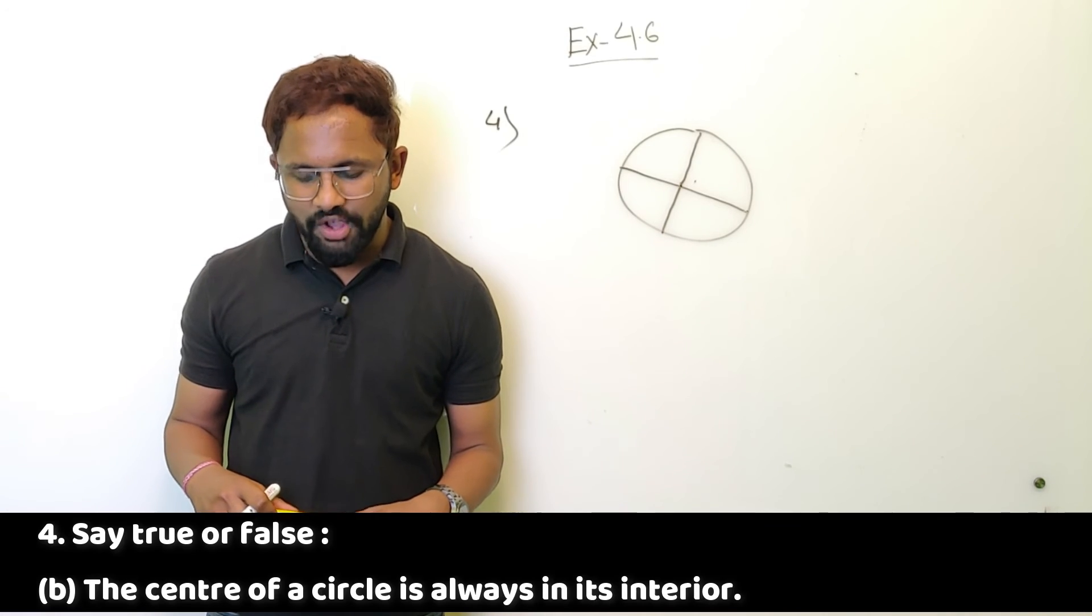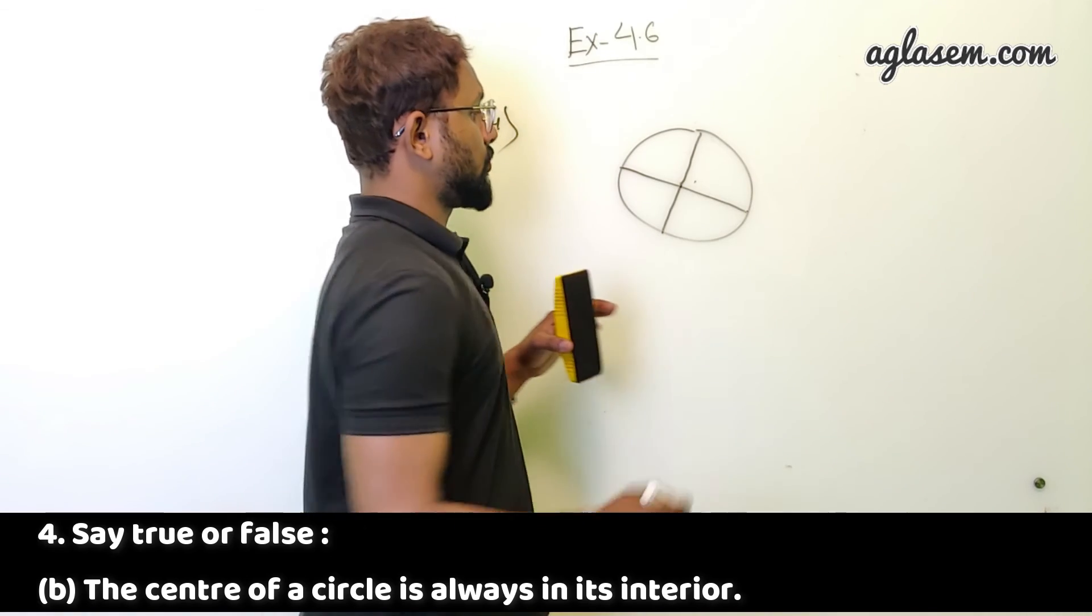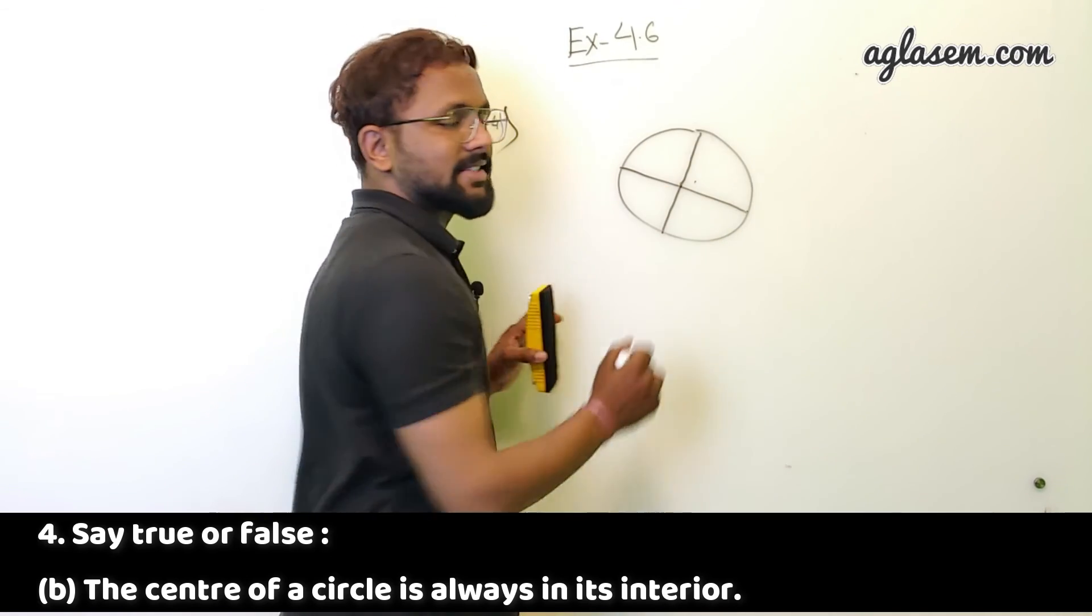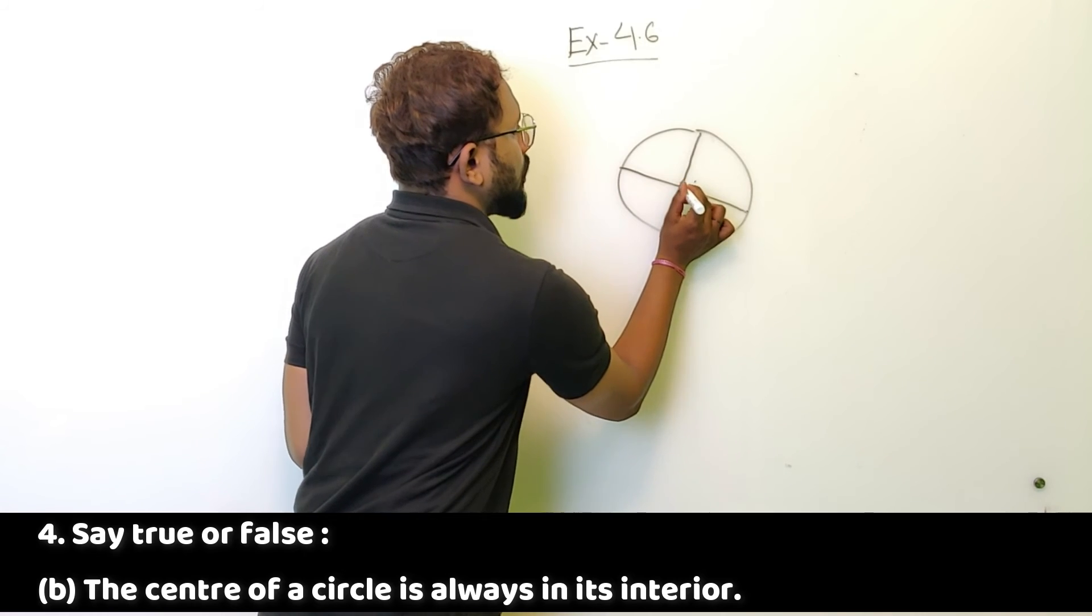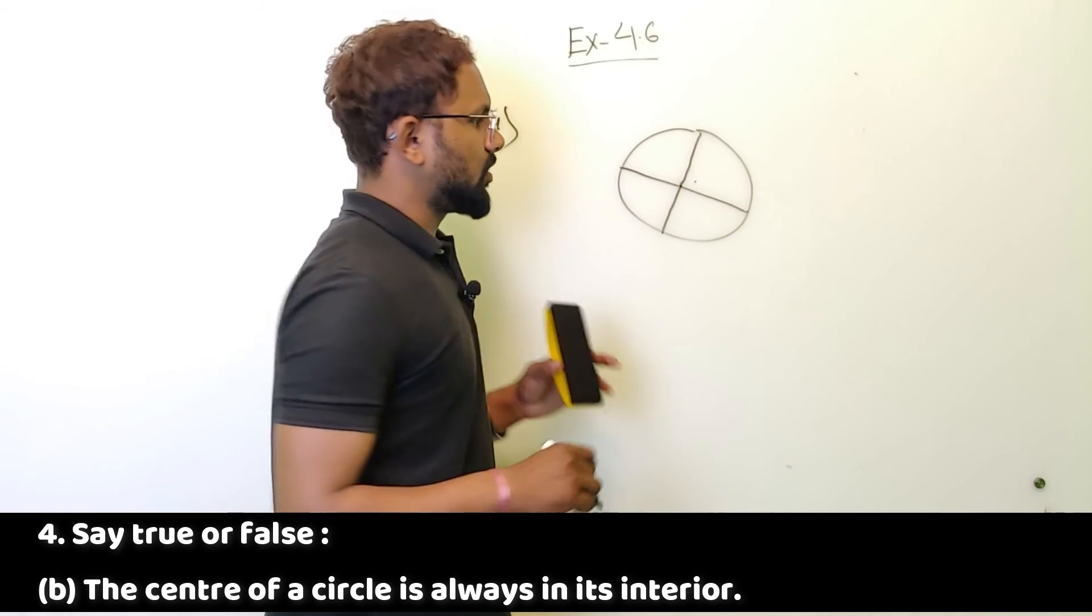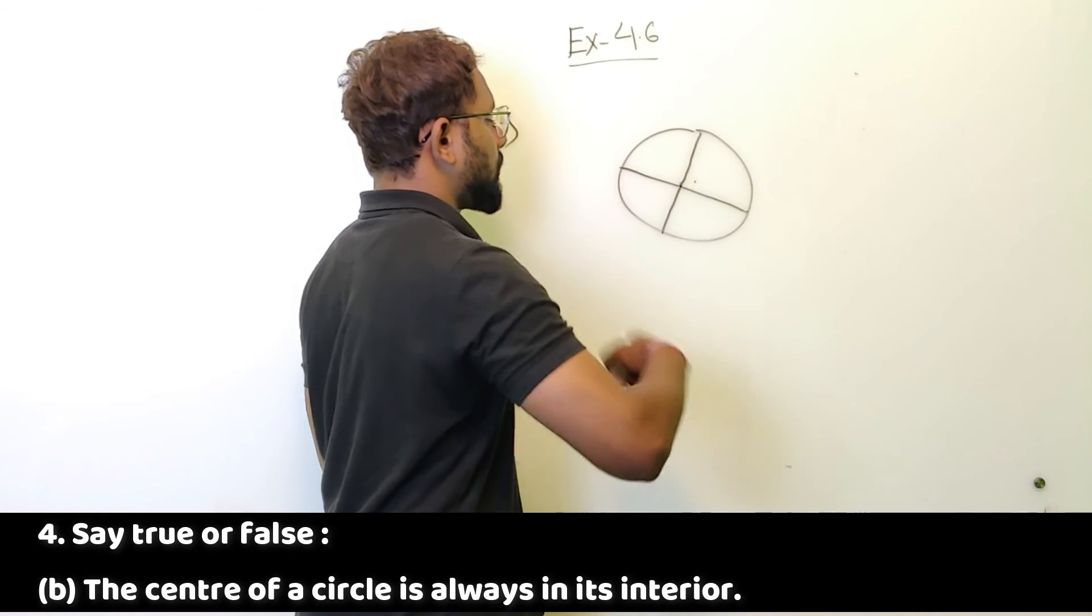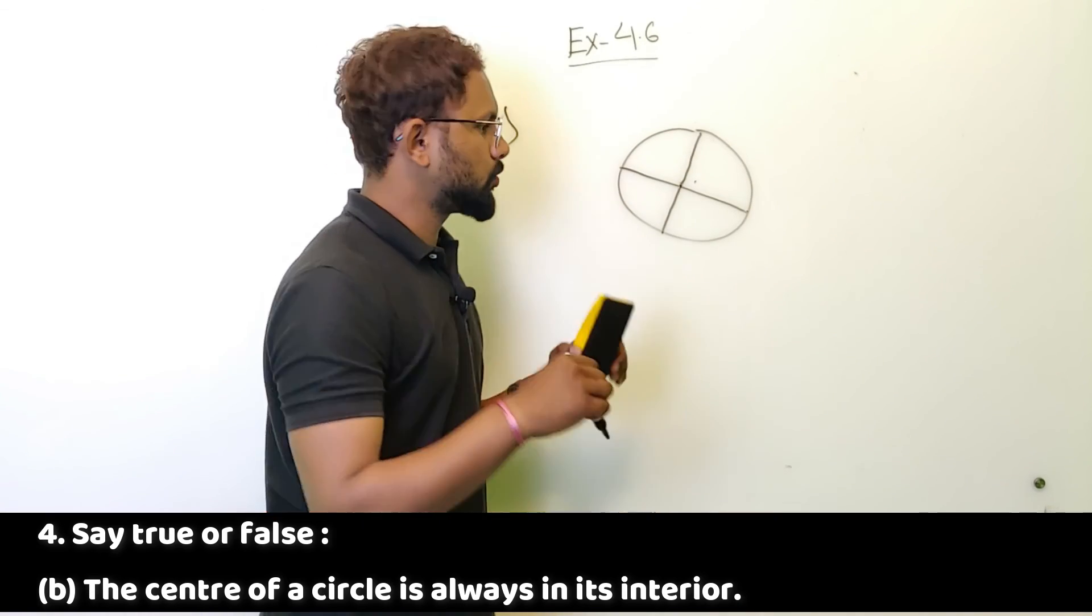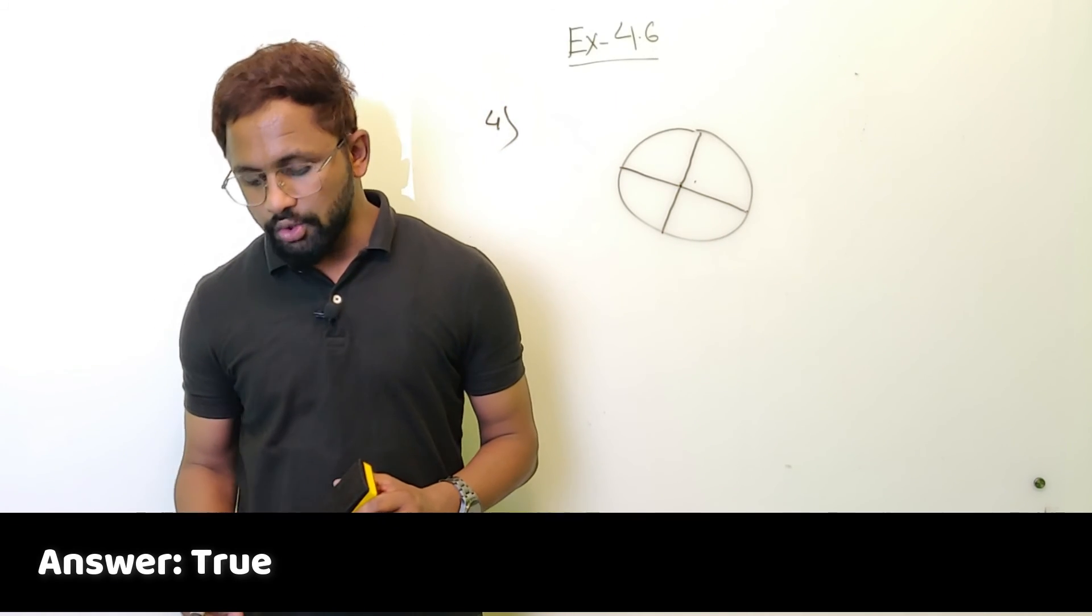B, the center of a circle is always in the interior. Center is a point from which the circumference is at equal distance, and it is always in the interior. Because if you are drawing a circle through your compass, you will get to know this is a point from around which you have to go through. So this is always going to be in the interior. So this is also a true statement.